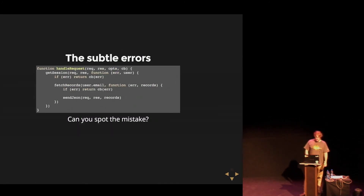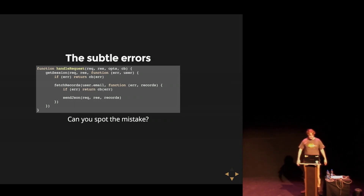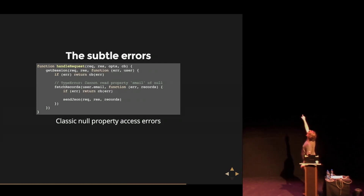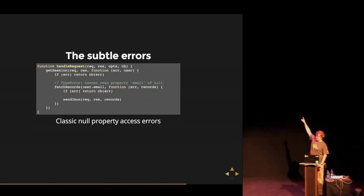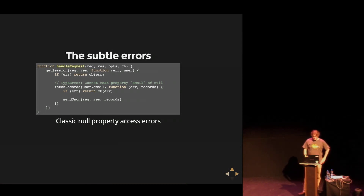Those were some of the easy errors. When it comes to error handling there are things that are more subtle and more difficult. For example, this code here has a bug that's hard to spot. You don't realize that if the user doesn't exist, it's going to crash your process. We'll never escape these — no matter what, these will always happen in production. At least 50% of our production crashes are someone forgetting to check that something was defined.